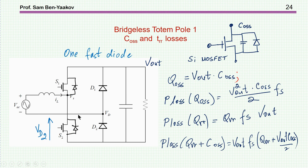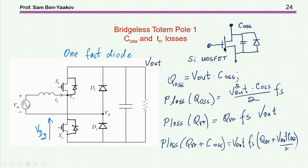Looking at the losses: the loss due to QRR plus the energy stored in the output capacitance — which is ½ × C × V-out² — discharged into the transistor at frequency Fs, gives a total switching loss expression that is a function of frequency. The higher the frequency, the higher the loss. You are therefore limited from working at high frequency because the penalty is quite high.